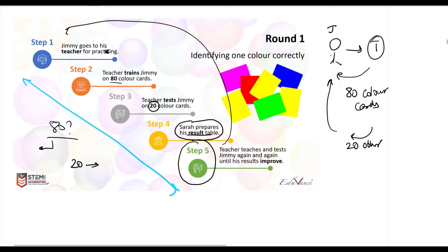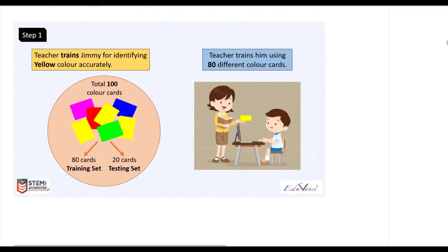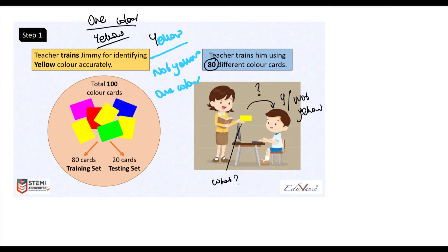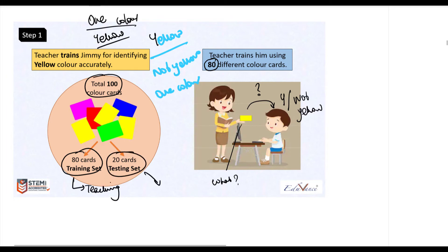Step 1: the teacher is training Jimmy for identifying the yellow color, since round 1 of the competition is about identifying one color — yellow. The teacher has a total of 100 cards. She divides them into 80 cards for teaching Jimmy and 20 cards for testing, or checking, whether Jimmy is learning.